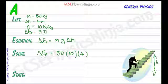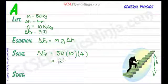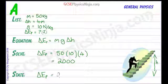If we do that calculation, we'll find that 50 times 10 is 500 times by 4 will be 2000. And if we state the answer, delta EP, the change in gravitational potential energy is 2000 joules.